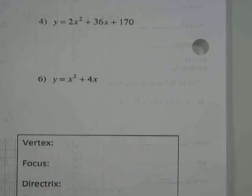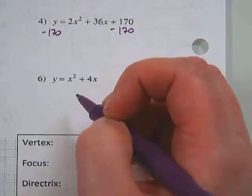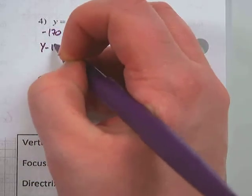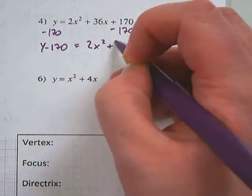So to start this one off, we have to subtract 170 from both sides. So we have y minus 170 equals 2x squared plus 36x.